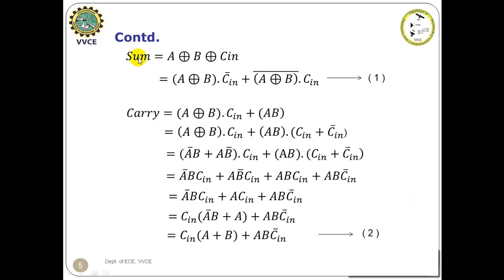Let us modify the expressions of sum and carry so that we can realize the logical operations of XOR, XNOR and OR gates. The expression of sum is A XOR B XOR Cin. Considering A XOR B as one input X and Cin as another input Y, X XOR Y can be written as XY bar plus X bar Y. Replacing X with A XOR B and Y with Cin we get the modified expression of sum as (A XOR B) Cin bar plus (A XOR B) bar Cin. Let us consider this logical expression as equation number one.